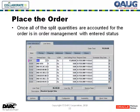We've configured the five games, split them the way we want, and we now save the configuration. All the split quantities are accounted for in the order in order management with an entered status. You still have five games listed because what's returning to the lines initially is nothing more than the final configuration with the final theme.